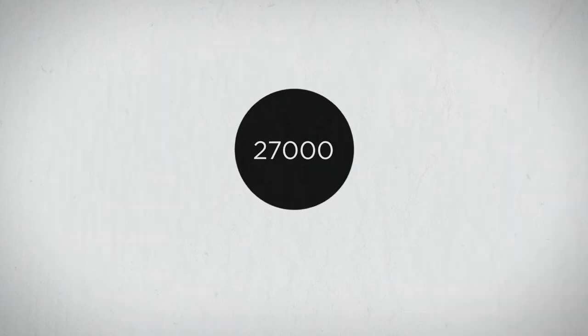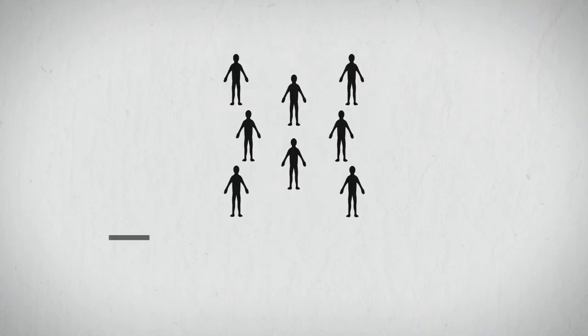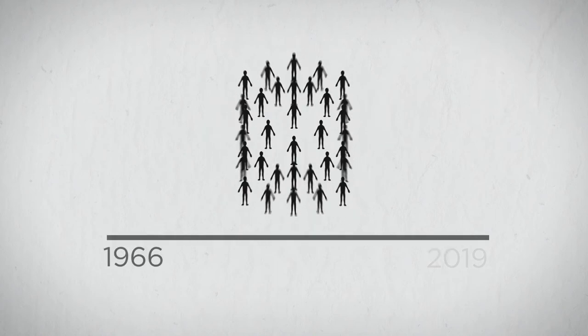Their data include, therefore, over 27,000 autistic and non-autistic people, studied from 1966 to 2019.